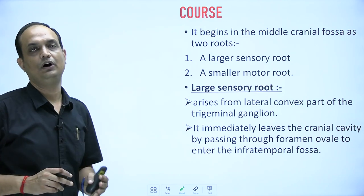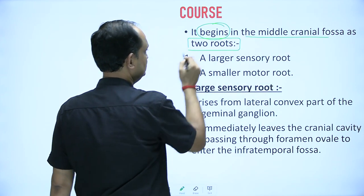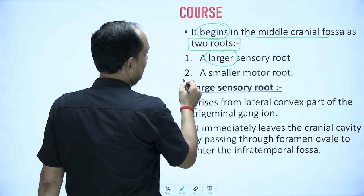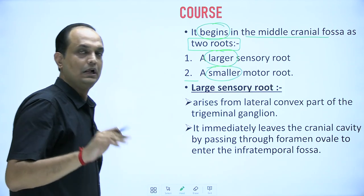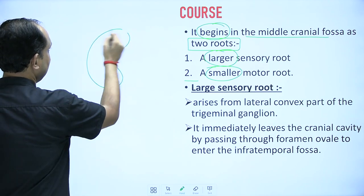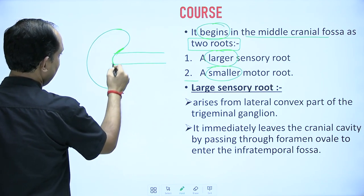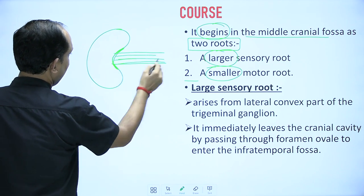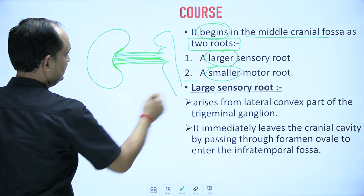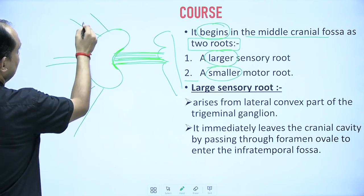What is the course of the mandibular nerve? The mandibular nerve begins in the middle cranial fossa as two roots. The first root is the large sensory root and the second is the smaller motor root. In the class on the trigeminal ganglion, I explained that the trigeminal ganglion has a concavity posteriorly where the main part of the trigeminal nerve goes toward the brainstem, and its anterior convex part gives the three branches: ophthalmic, maxillary, and mandibular.